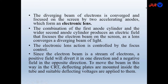The diverging beam of electrons is converged and focused on the screen by two accelerating anodes which form an electronic lens. They will converge the beam produced by the electron gun. The combination of the first anode cylinder and the wider second anode cylinder produces an electric field that focuses the electron beam on the screen, much as a lens converges a diverging beam of light — which is why it is known as an electronic lens. This electronic lens action is controlled by the focus control knob present as a button on the CRT.